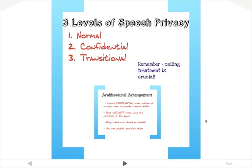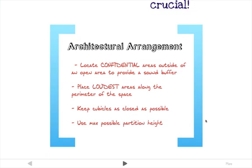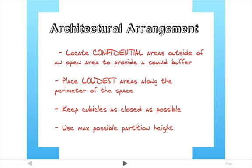Sounds in an open office will travel directly from the source to the listener, but can be fractured by objects in its path or reflected off surfaces. The absorption characteristics of the ceiling are usually the most important factor. The architectural arrangement of a space has a lot to do with speech privacy.